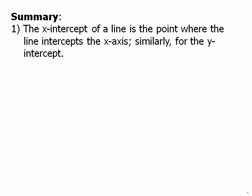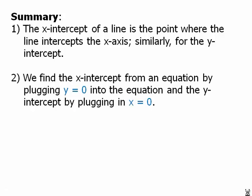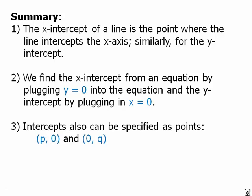In summary, the x-intercept of a line is the point where the line intersects the x-axis, and similarly for the y-intercept. We find the x-intercept from an equation by plugging y equals zero, and we find the y-intercept by plugging in x equals zero. The intercepts can be specified as points: p comma zero is an x-intercept, and zero comma q is a y-intercept.